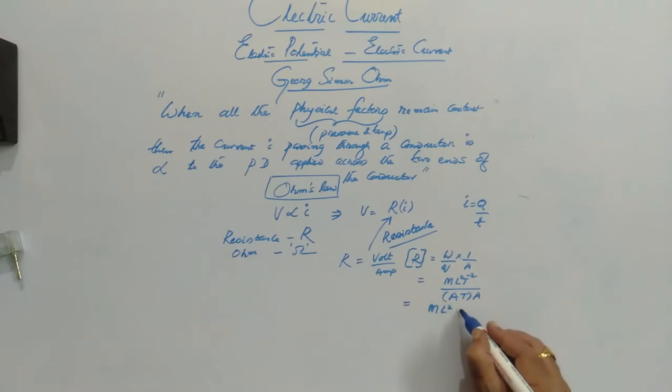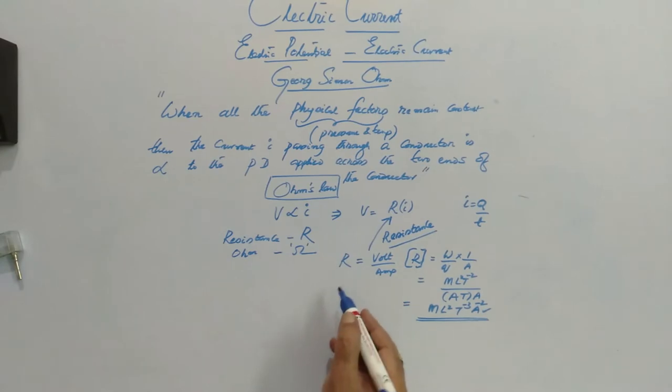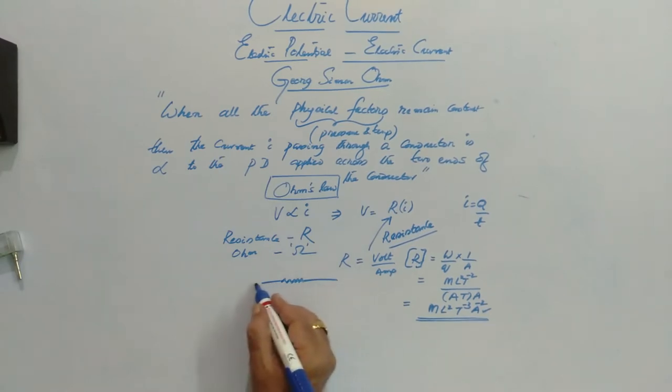ML² T⁻³ A⁻². Resistance is simply a number. Resistance is represented by this electrical symbol.